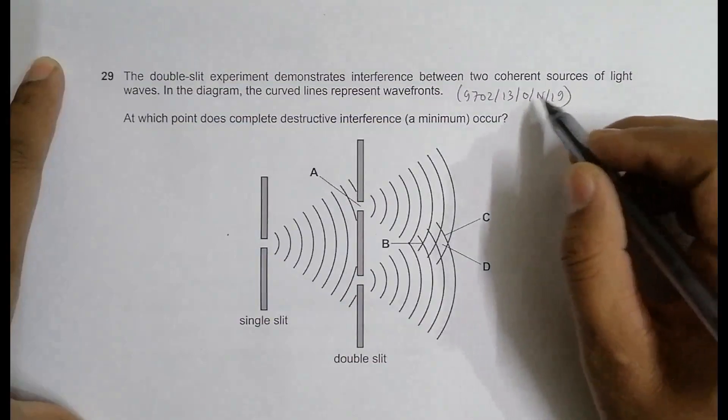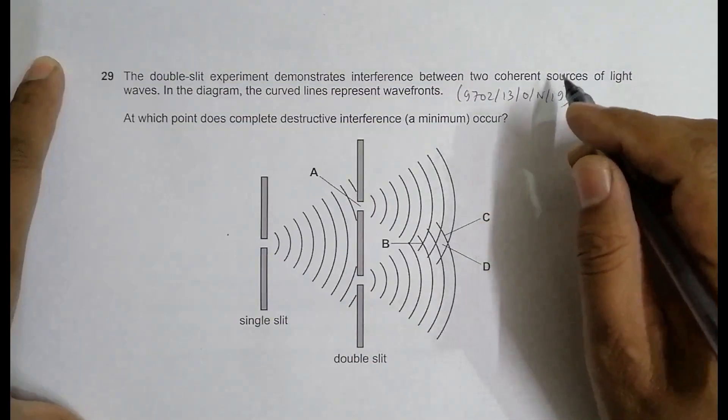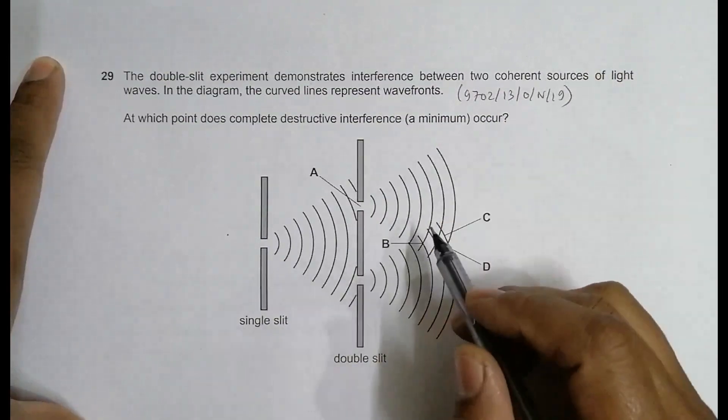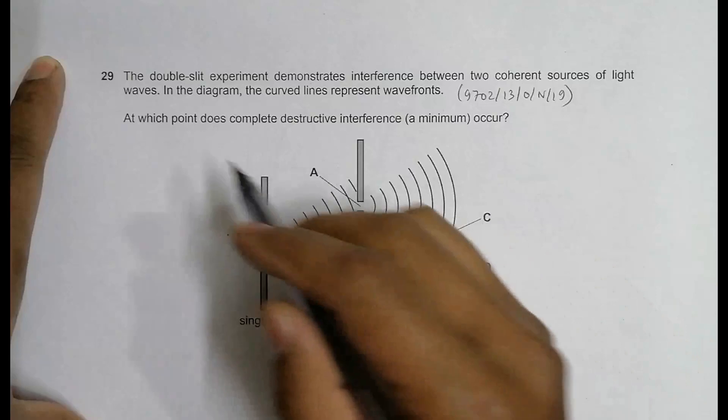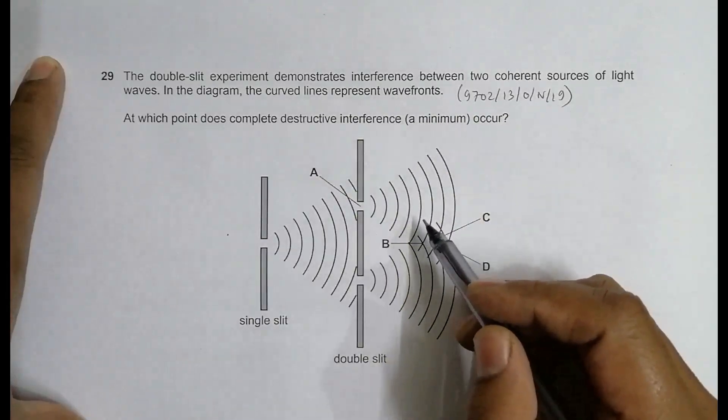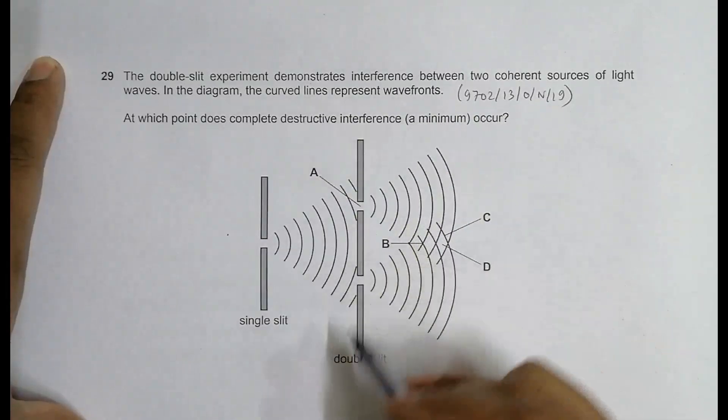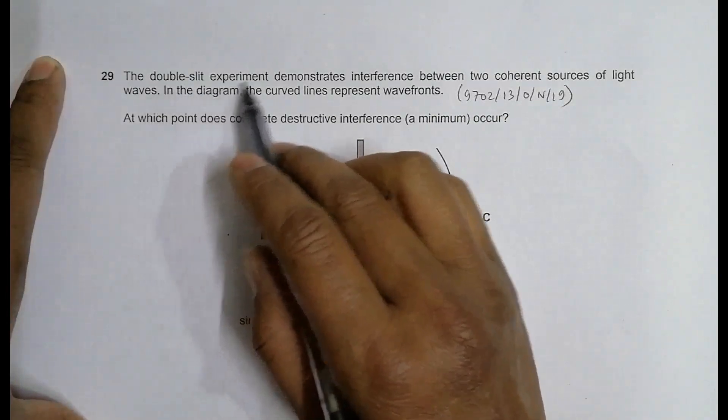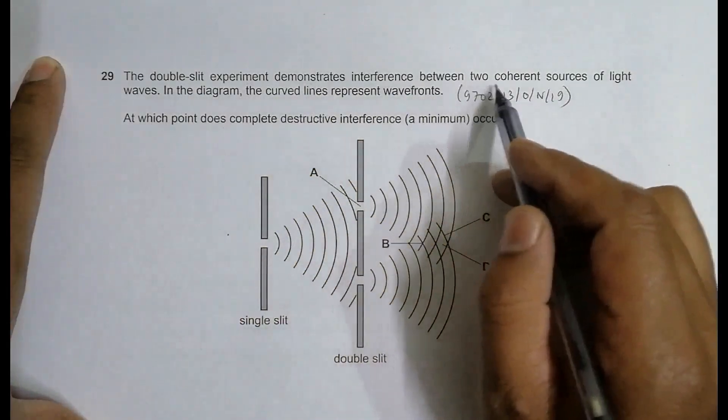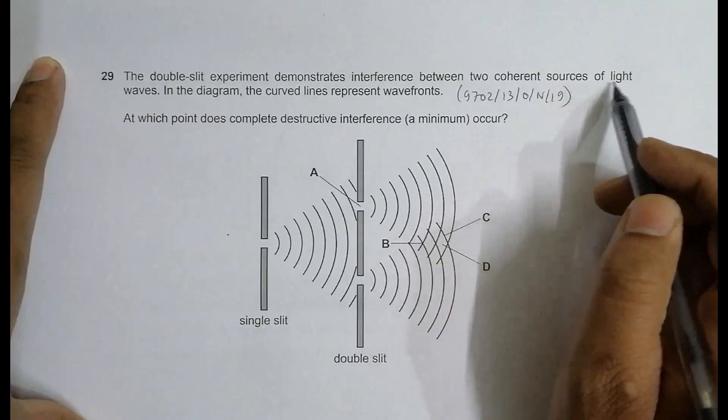Hello folks, this is the October-November 2019 paper 13, question number 29. This question is concerned with the concept of superposition of waves. As you can see from the diagram, it's about a double slit.